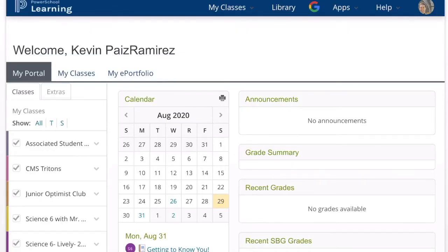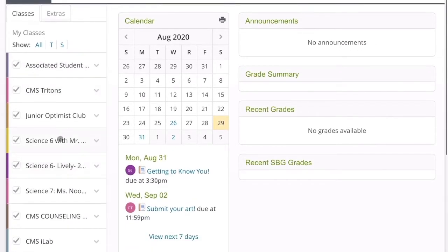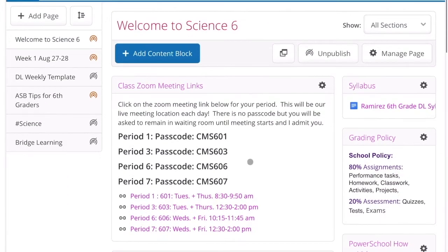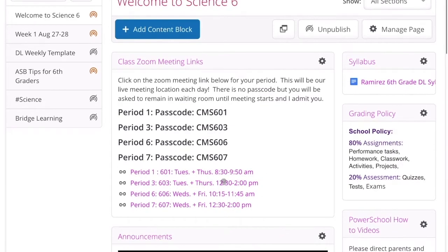Now let's get acquainted with PowerSchool. The first thing you wanna make sure is that you're going to the right class, which is Science 6 with Mr. Ramirez. Once this loads, you'll be met with a home screen, as well as Zoom meeting links. It's separated out between class periods. First period is 601. Sixth grade, first period. Third period is 603. Sixth period is 606. Seventh period is 607. All the links are found there as well.